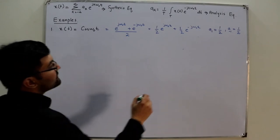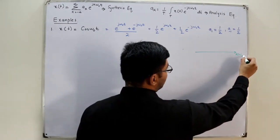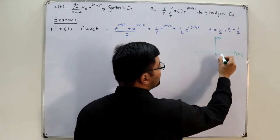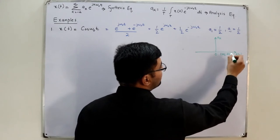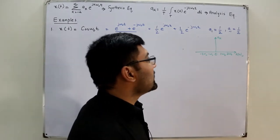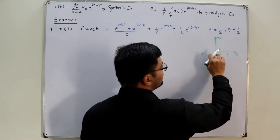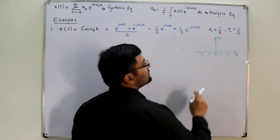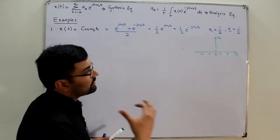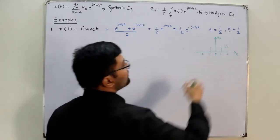To draw the plot, you simply have this as your k-axis (the kω₀ axis) and this as the aₖ axis. You have 0, then ω₀, then 2ω₀, and similarly −ω₀, −2ω₀. We only represent it with integer k values since ω₀ is already understood, so we don't write ω₀ explicitly. The values at k = 1 and k = −1 are both 1/2.